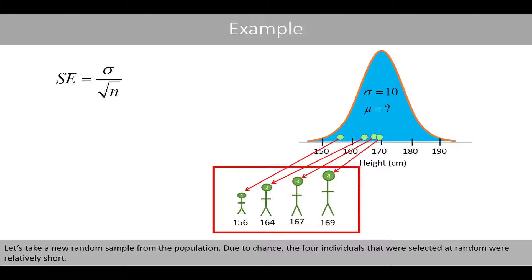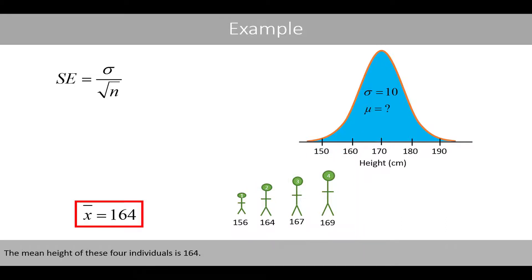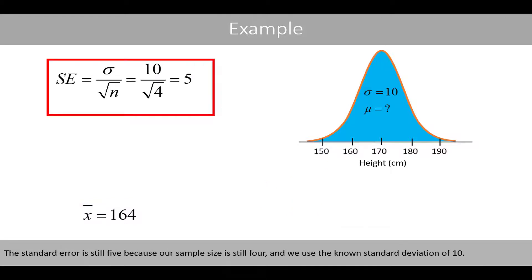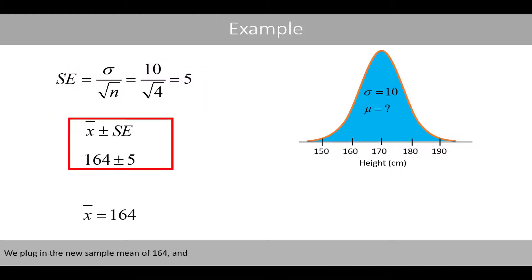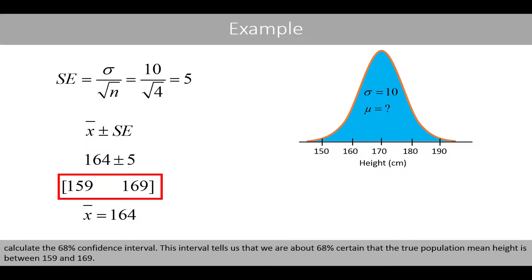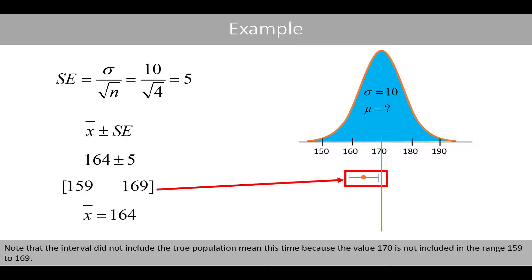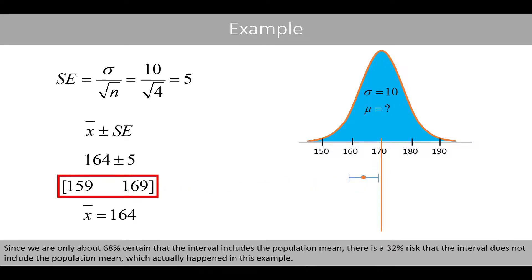Let's take a new random sample from the population. Due to chance, the four individuals that were selected at random were relatively short. The mean height of these four individuals is 164. The standard error is still 5 because our sample size is still 4 and we use the known standard deviation of 10. We plug in the new sample mean of 164 and calculate the 68% confidence interval. This interval tells us that we are about 68% certain that the true population mean height is between 159 and 169. Note that the interval did not include the true population mean this time because the value of 170 is not included in the range 159 to 169. Since we are only about 68% certain that the interval includes the population mean, there is a 32% risk that the interval does not include the population mean, which actually happened in this example.